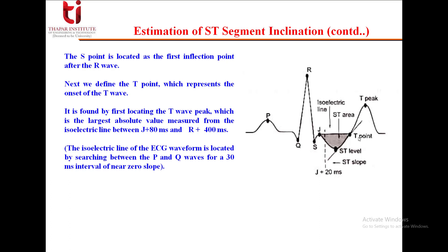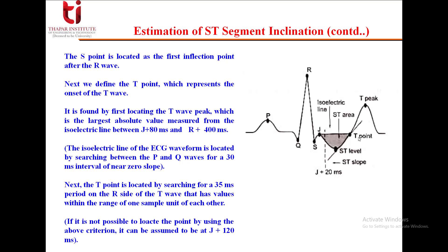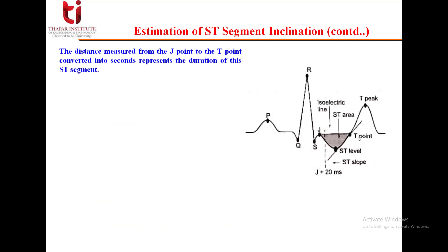The isoelectric line of the ECG waveform is located by searching between the P and Q waves for a 30 ms interval of near zero slope. Next, the T point is located by searching for a 35 ms period on the R side of the T wave that has values within the range of one sample unit of each other. If it is not possible to locate the point using the above criteria, then it can be assumed to be at J plus 120 ms.